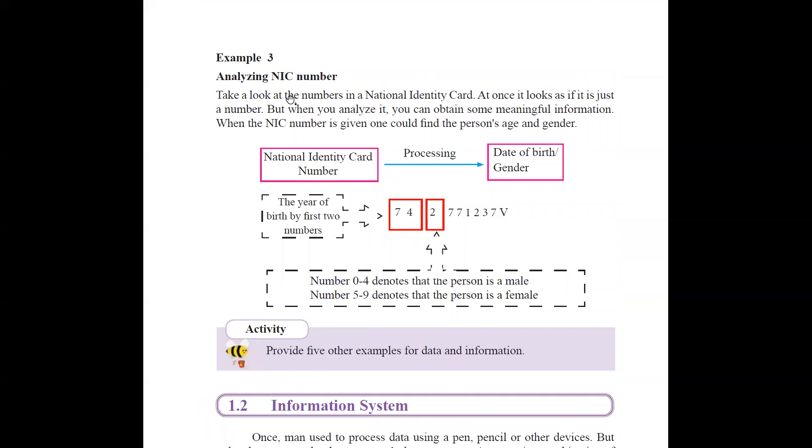So they have given another example. So this NIC number, this is not the latest NIC they're talking about. This is what we had. So usually, you will get a new NIC. But in the older version, we had the number like this. So this number, just if you look at it, it's just a number, there's no any information in it, just kind of data. But if you analyze it, then you can understand this number has some meaningful information.